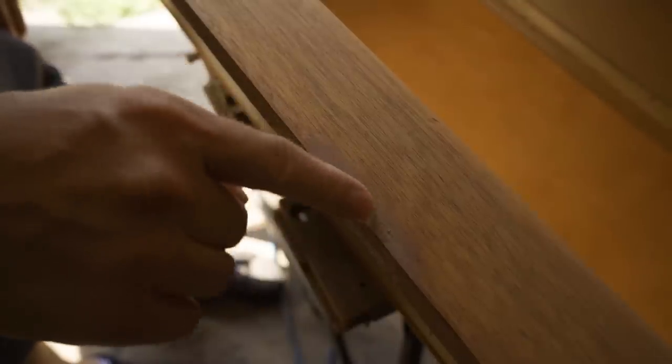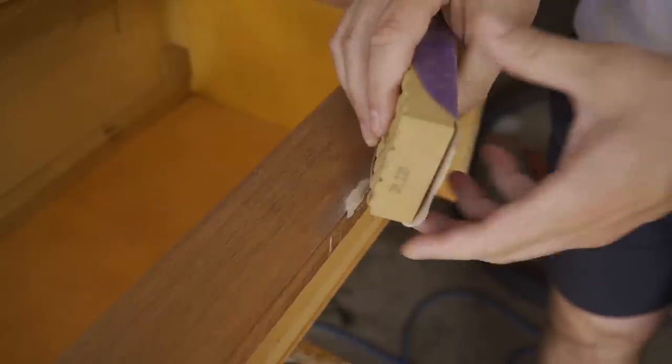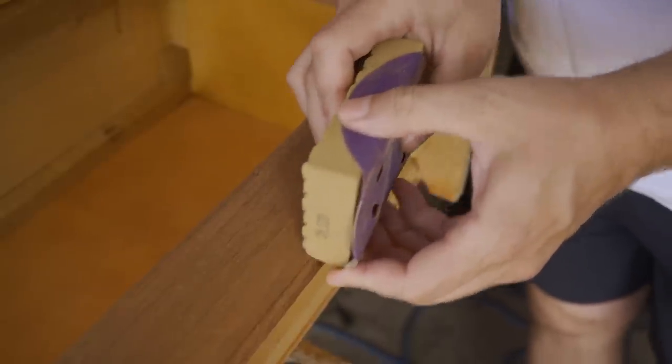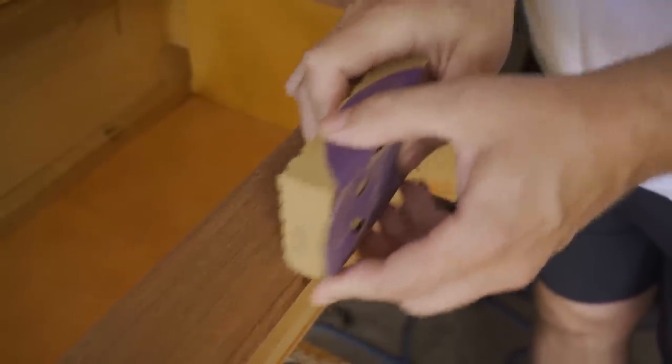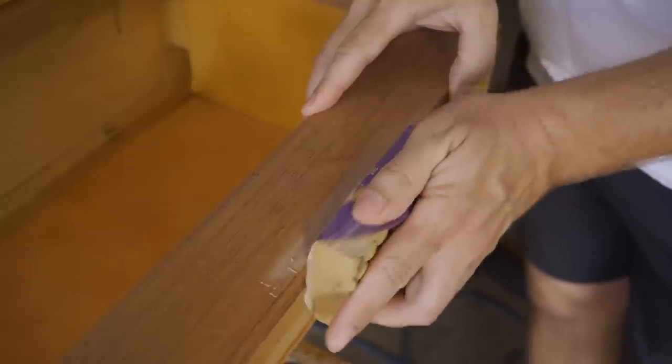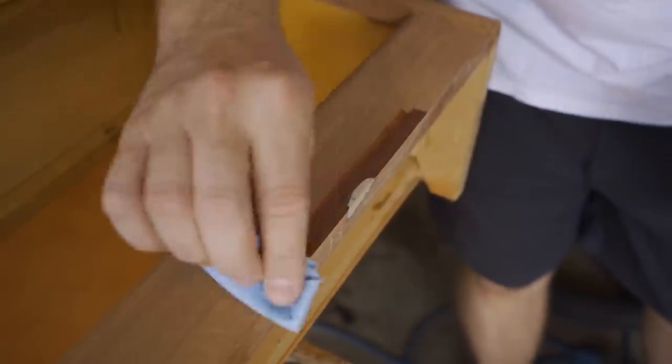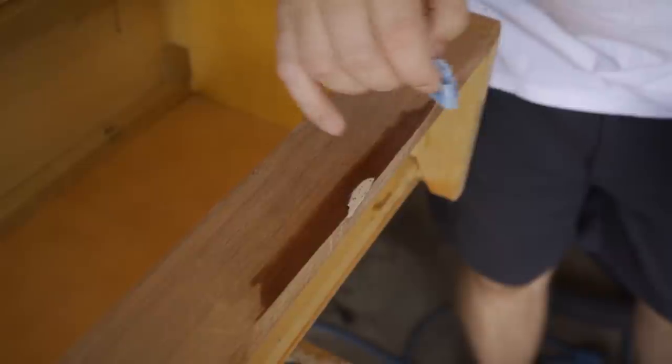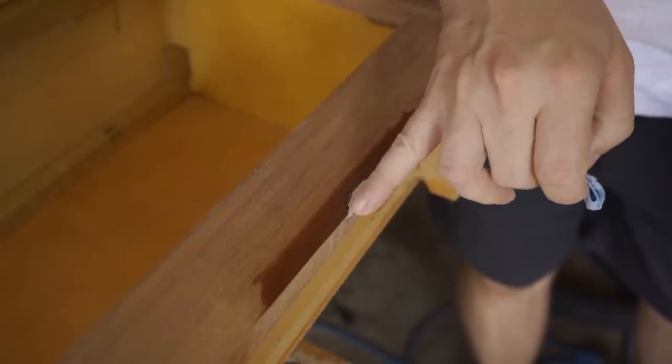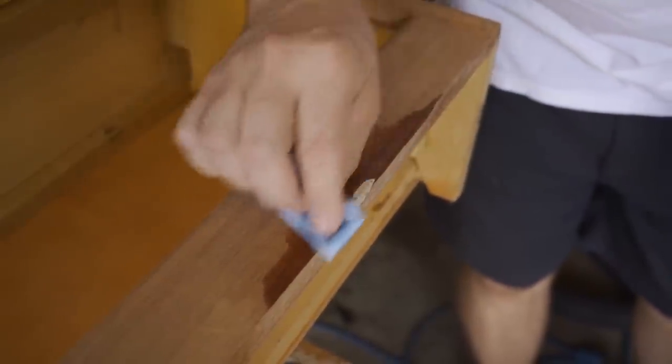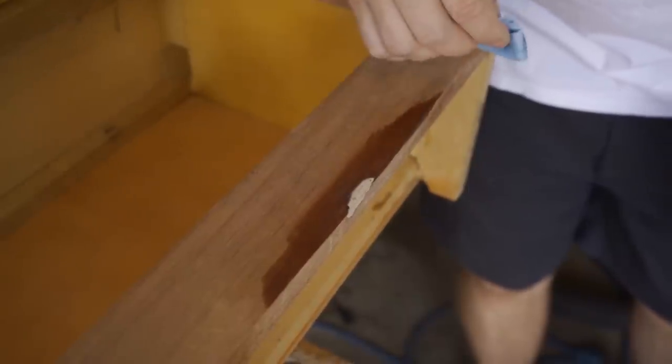I let this dry overnight and now I'm going to use some 180 grit sandpaper to gently take it down a bit and level it out. So this is obviously nowhere near the color of the wood so I'm going to have to stain that.